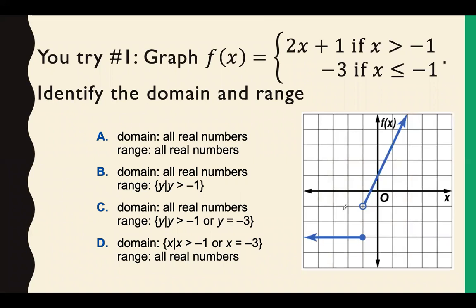However, we do have a jump in our y values. There are no existing y values from negative 1 to negative 3. We do exist at negative 3 for y. And so that means we're going to go with answer choice C.